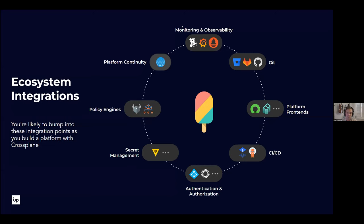On ecosystem integrations: as you think about building with Crossplane in a production capacity, you'll bump into about eight areas. You need to know how to monitor your control plane, how to back up and restore it, where to store artifacts, front ends, CI/CD, secrets management, policies and governance, and how to integrate with your identity provider. There's already tooling available in the Kubernetes ecosystem for all of these that you can apply to Crossplane and reap the same benefits.